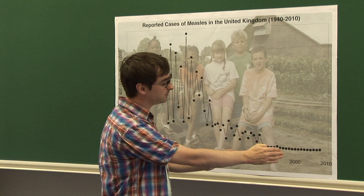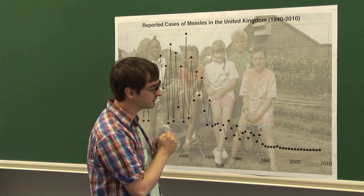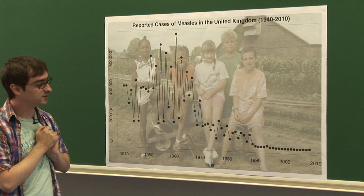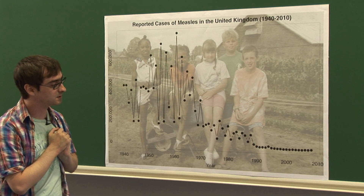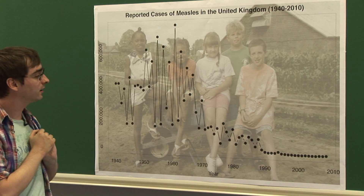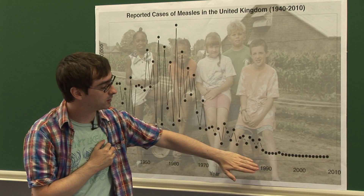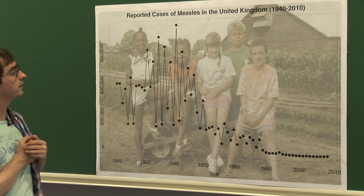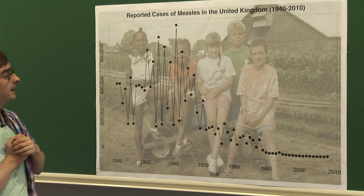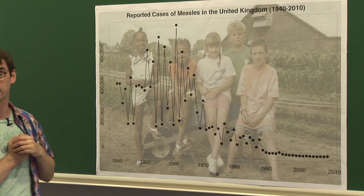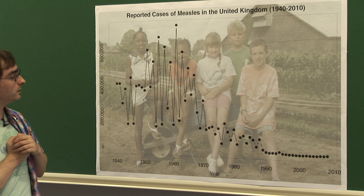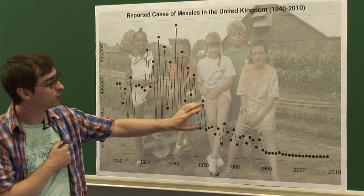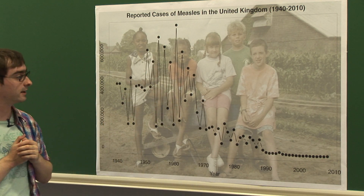In the last period of the data — the last 20 years, moving into our current century — we see that the reported incidence was practically nothing. Hugely reduced from the numbers of people who were having measles in the early part of the century. We went from a period where everyone pretty much got measles to no one, over quite a short period of time.